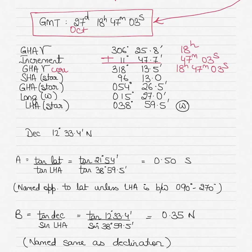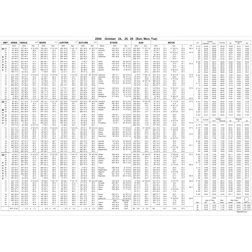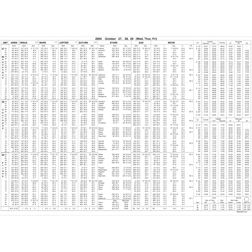Once you add the increment you get GHA Aries corrected for 18h 47m 03s. You also need the SHA of the star and its declination. Here in the nautical almanac, 27th October 2004 is open. The stars are listed alphabetically — Rasalhague is here. The SHA is 96° 13' and the declination is 12° 33.4' North.